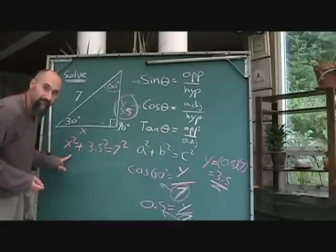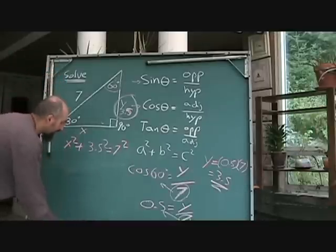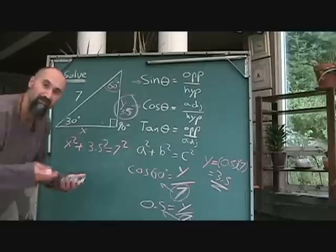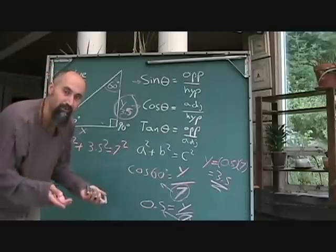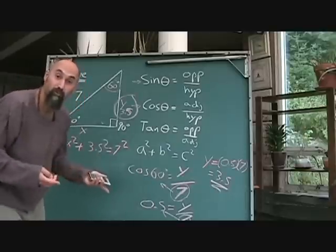So all you're going to try to do is get x by itself now. So again, you're going to grab your calculator because 3.5 is, you know, it's not a clean number. You don't know what 3.5 squared is.